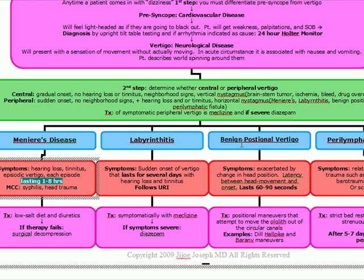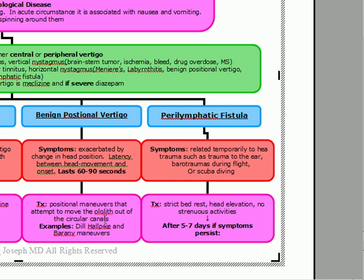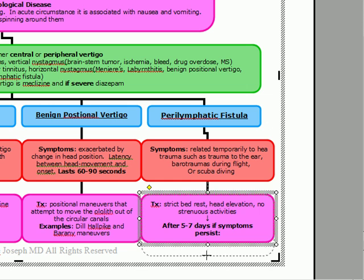Benign positional vertigo lasts only 60 to 90 seconds and occurs when the patient suddenly moves their head. Treatment is positional maneuvers that attempt to move the otolith out of the semicircular canals. Perilymphatic fistula is related to head trauma, such as trauma to the ear or barotrauma during flight or scuba diving. Treatment is strict bed rest, head elevation, and no strenuous activities. If symptoms persist after five to seven days, surgical exploration is indicated.